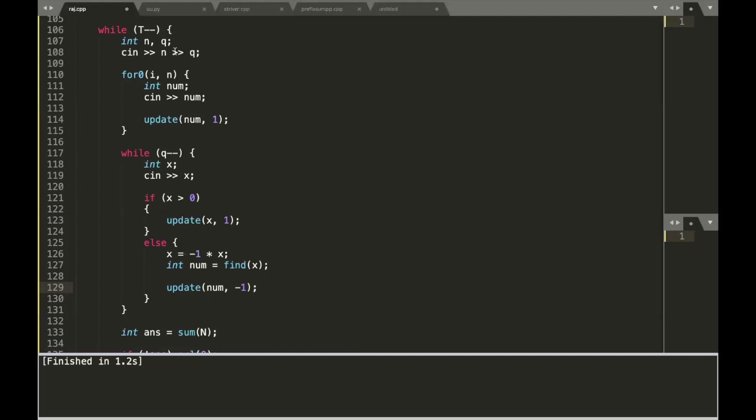As you did in the first approach, we similarly took n and q, then took the numbers and called the update function. Then we ran a loop for the queries and took x. If x was a positive number, we updated the Fenwick Tree by plus 1.